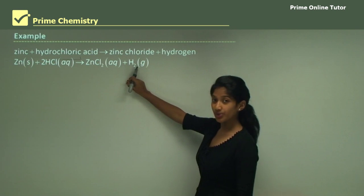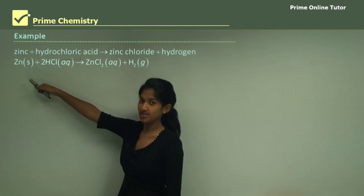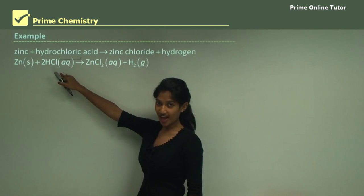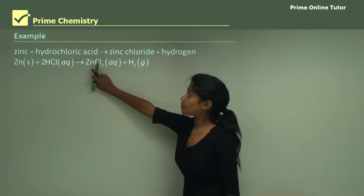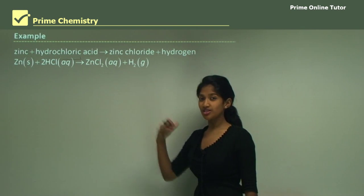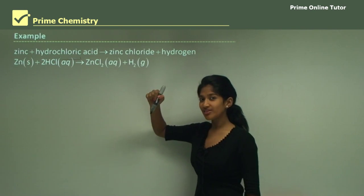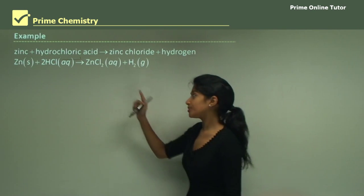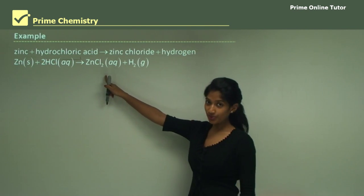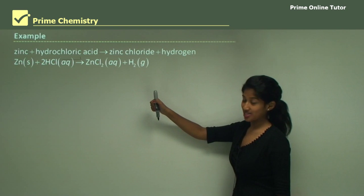If you write this as a chemical equation, you have zinc, which is Zn — refer to your periodic table. And HCl is hydrochloric acid. They react to form zinc chloride. Now zinc has a valency of plus two, while chloride, which is in group seven, has a valency of minus one. When they switch over, it'll be ZnCl₂ and hydrogen gas is being produced.